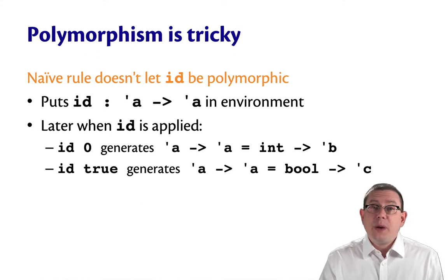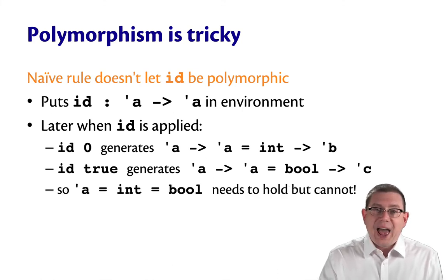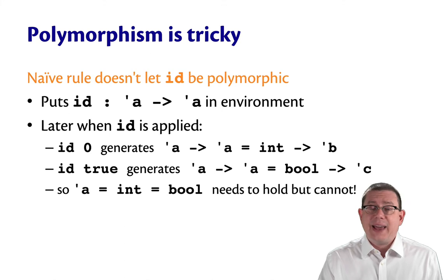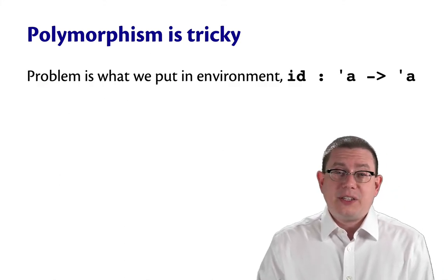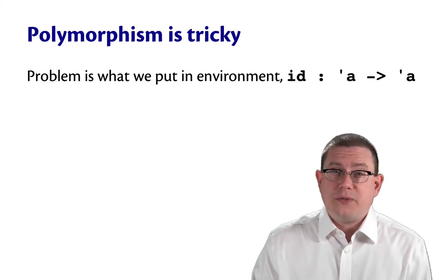But then when we apply id to true, we're going to get another constraint which is that alpha arrow alpha equals bool arrow something else. So the bool there is because we have a boolean constant that we know. And that will lead to an additional constraint during unification of the form alpha equals bool. So now we've got an inconsistency. We need alpha to equal both int and bool and that can't happen.